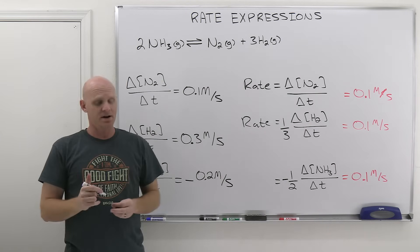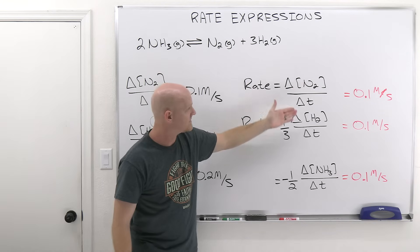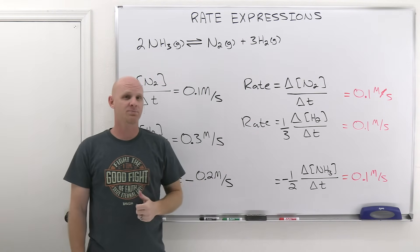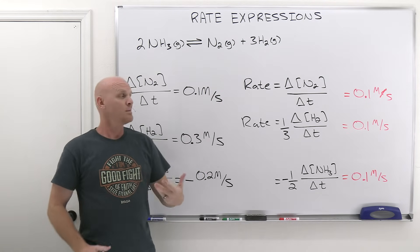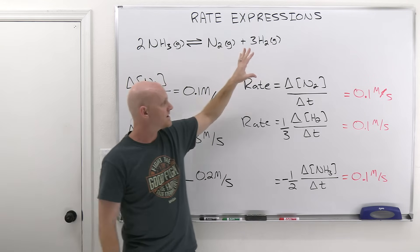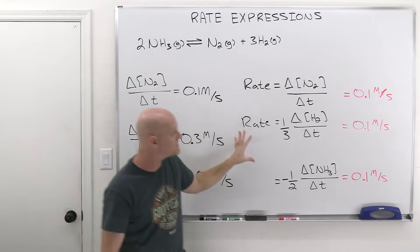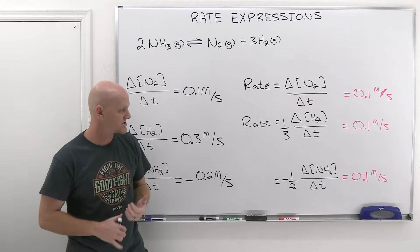So questions you might see on this are: what is a valid rate expression for this reaction? And any one of these three expressions, including these fractions here, would be the valid rate expressions. Students don't often realize what they mean, they just memorize that's what a rate expression looks like. But the key is, they take any reactant or product's change in concentration over change in time and convert it into the overall rate of reaction. That's what a rate expression accomplishes.